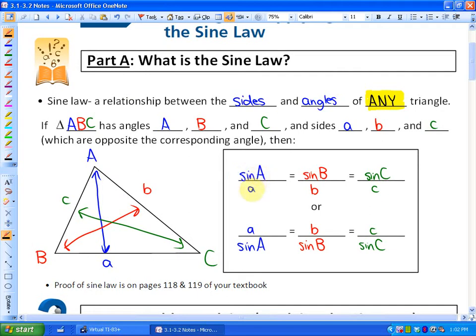It says that sine of angle A over side A is equivalent to sine of angle B over side B is equivalent to sine of angle C over side C, or you could take the reciprocal.